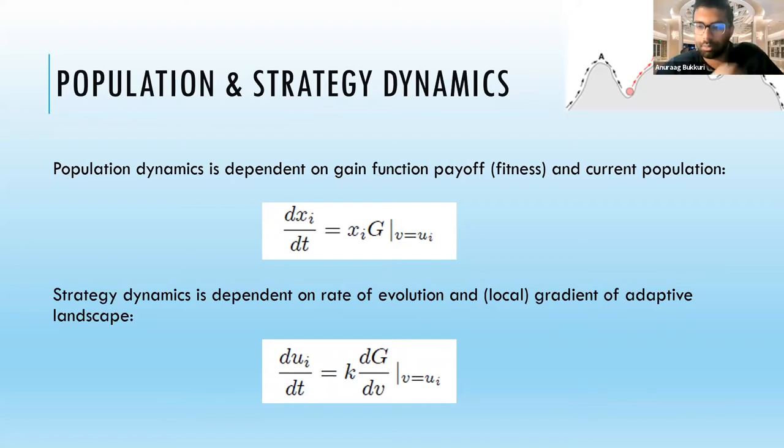If you look at the figure at the top right, the red circle represents the cancer cells trying to scale the adaptive landscape to reach a fitness peak by changing their strategy. The rate at which they do this depends on their step size, the evolvability, and the slope of the adaptive landscape. It's important to note that evolution acts as a greedy algorithm, so it can get trapped in local peaks.